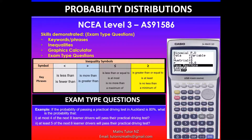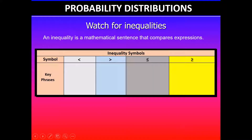Greetings, everyone. In this video, we'll be looking at NC Level 3 Probability Distributions Achievement Standard. In this video, I'll be focusing on keywords and phrases that are associated with inequalities. We will also look at exam type questions. So we'll start off by looking at the keywords and phrases that are linked to inequality symbols that you will need to be familiar with for this achievement standard.